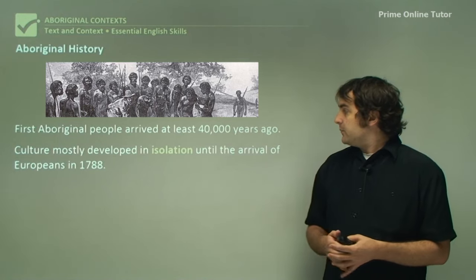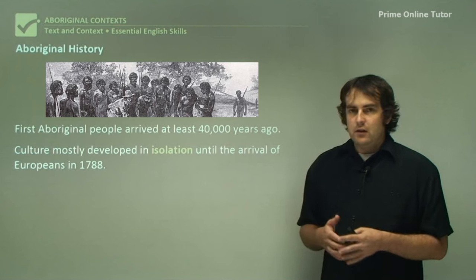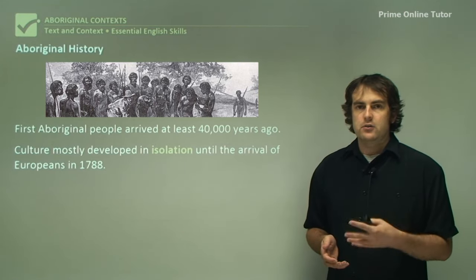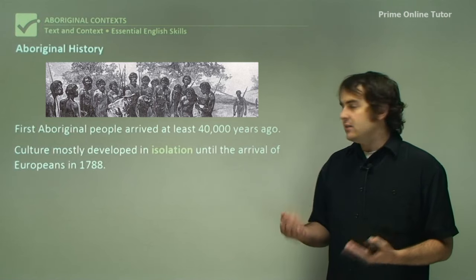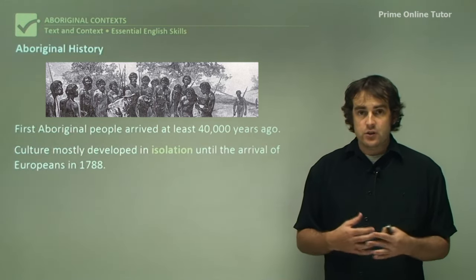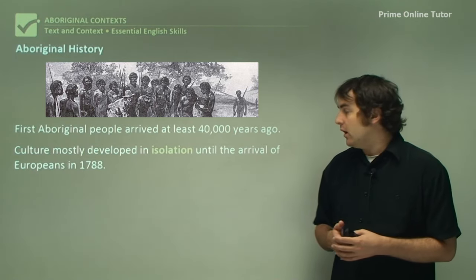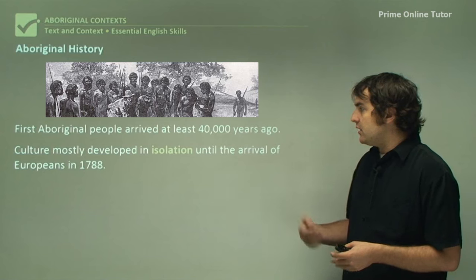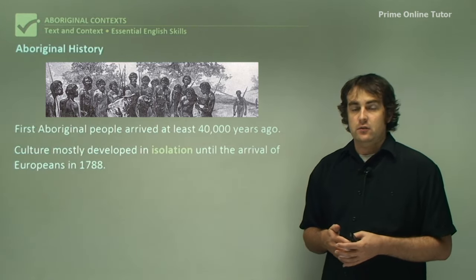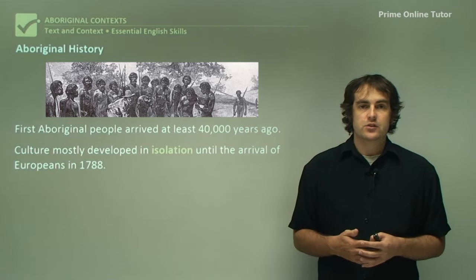The moral of the story is that Aboriginal people have lived in Australia for a very long time. Their culture mostly developed in isolation until the arrival of Europeans in 1788, so they were very much isolated from the rest of the world with their own unique way of existence. They did have some contact with the outside world - with communities in Indonesia and some argue in Asia as well - but mostly the culture was developed in isolation.